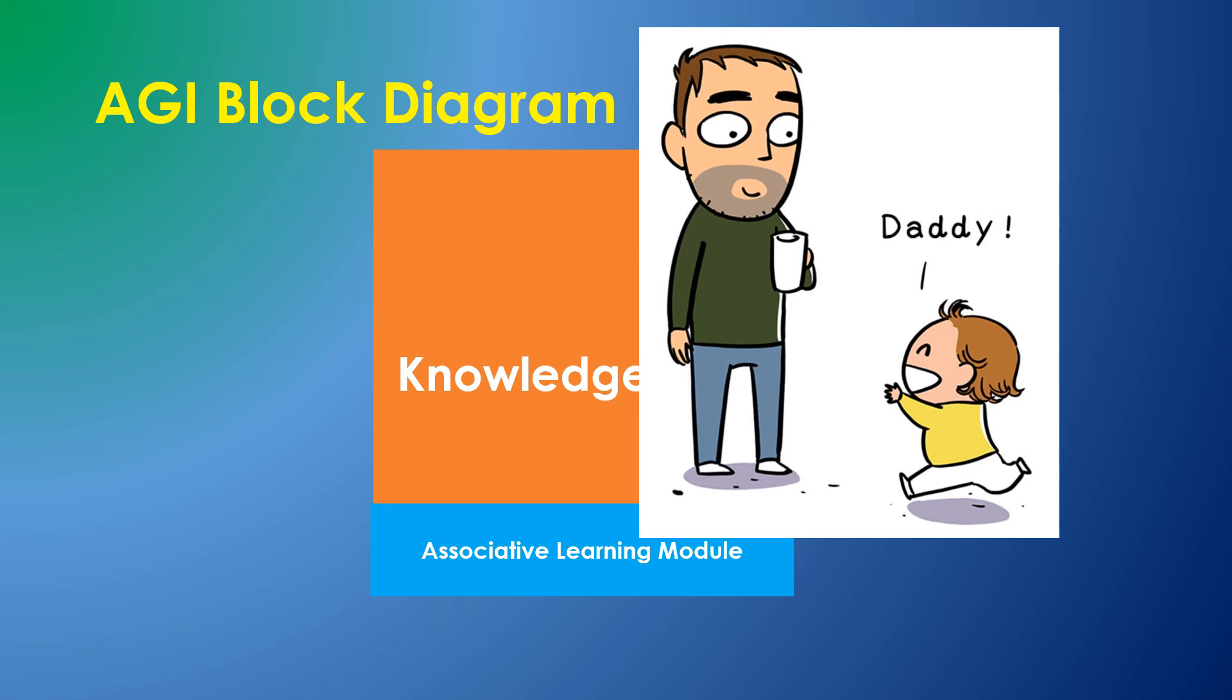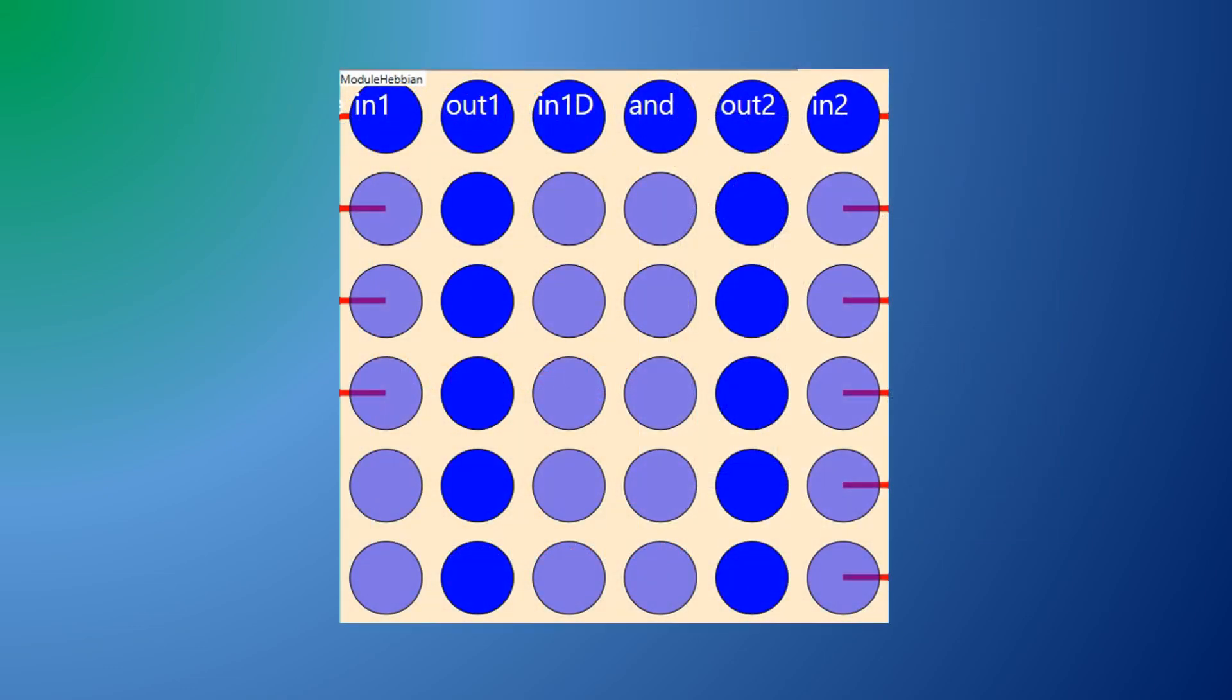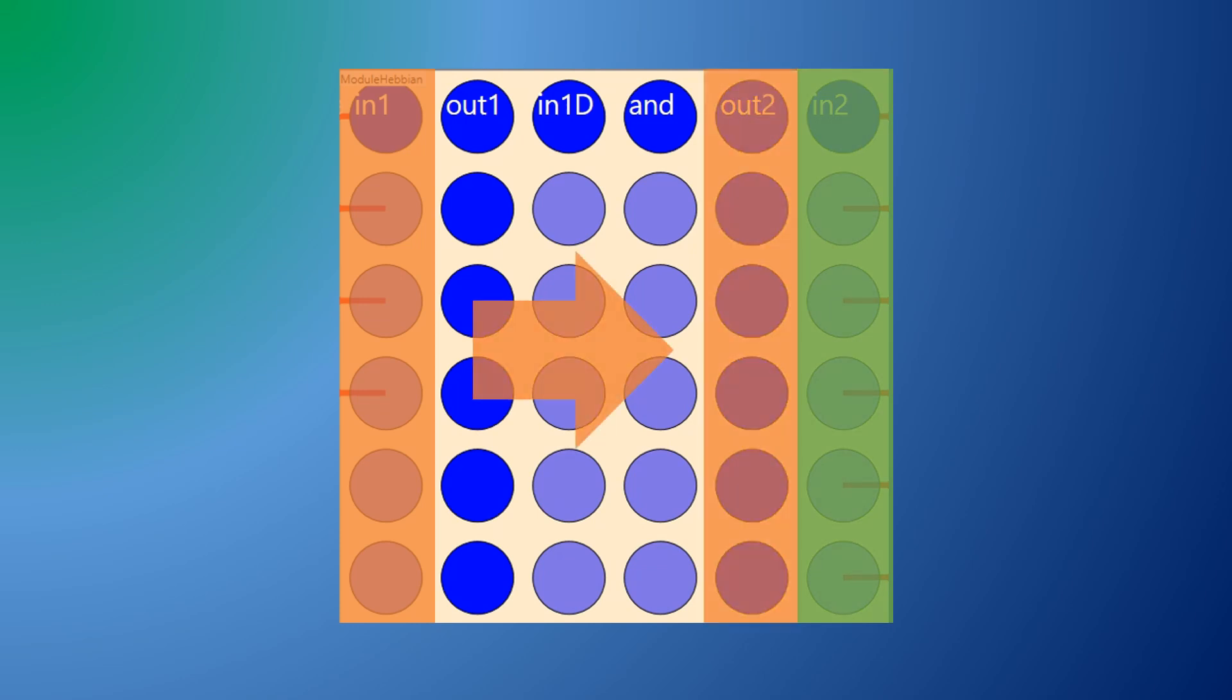Here is the Brain Simulator associative learning module. The input columns are on the left and right sides and the outputs are in the column next to the inputs.